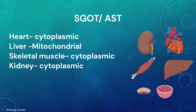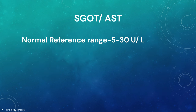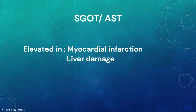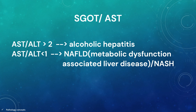SGOT, also called AST, is synthesized in heart, liver, skeletal muscle and kidney, and it has two biological forms. First is cytoplasmic and second is mitochondrial. The cytoplasmic forms are seen in heart, skeletal muscle and kidney, and mitochondrial forms are seen in liver. The normal reference range for SGOT is 5 to 30 units per litre. It is elevated in myocardial infarction and liver damage. If the AST/ALT ratio is more than 2, then it suggests alcoholic hepatitis. If AST/ALT is less than 1, then it can suggest NAFLD, that is metabolic dysfunction associated liver disease, or NASH.